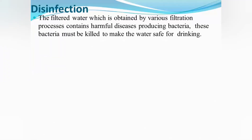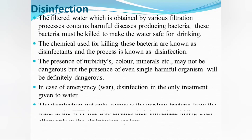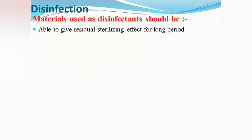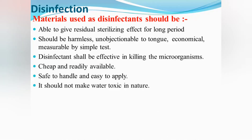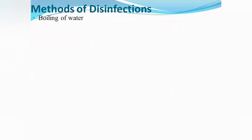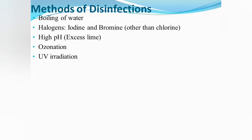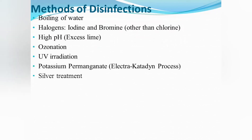Disinfection was covered in the last video, where we saw various different disinfection methods and the materials used as disinfectants. The methods covered included boiling water, halogens, excess lime, ozonation, ultraviolet radiation, potassium permanganate, and silver treatment.